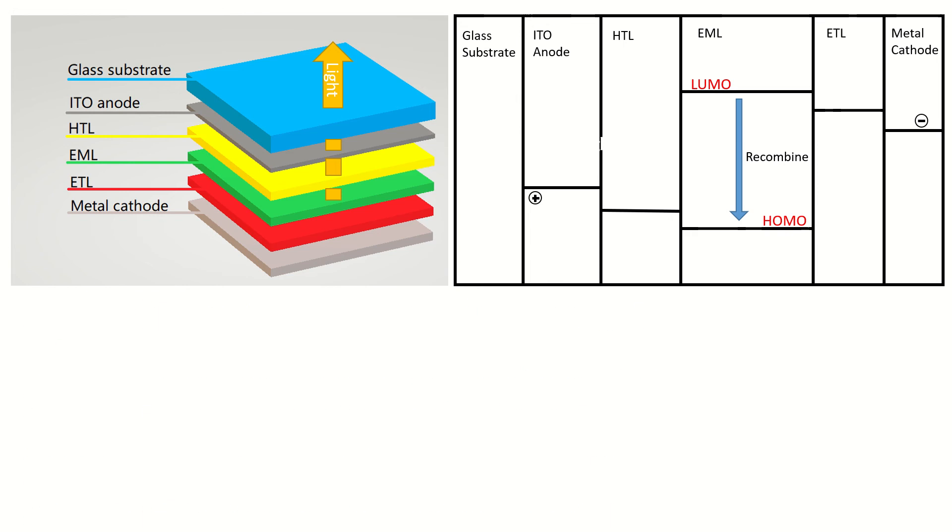So how does this device work? We can apply voltage on the ITO anode and metal cathode and magic things happen. It lights up. Under the voltage bias, holes and electrons will travel step by step to the emission layer where they will recombine and form excitons.